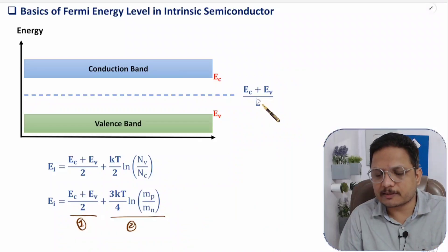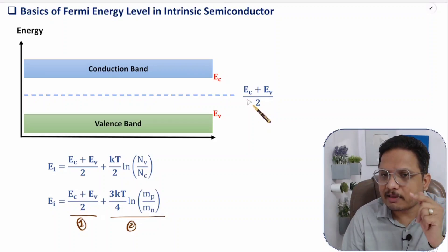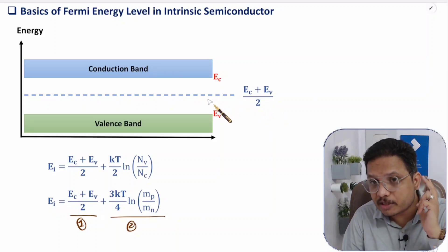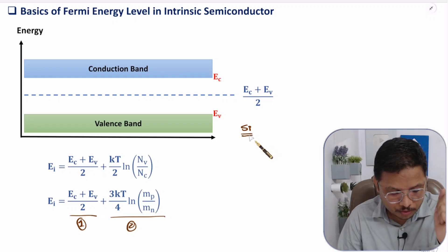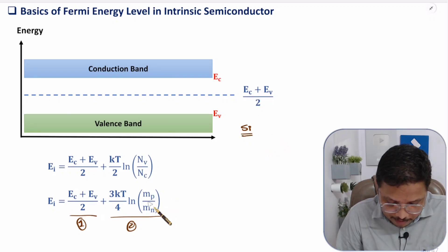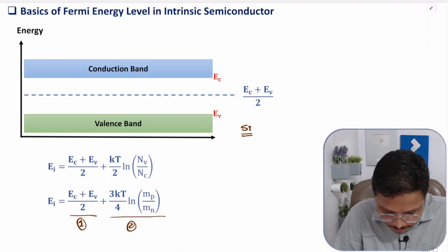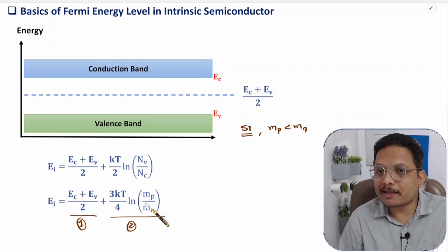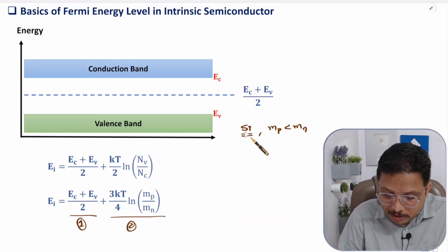But sometimes in competitive examinations, a tricky question comes — like, for silicon, will the Fermi energy level be below or above (Ec plus Ev)/2? For silicon, the mass of holes Mp is lower than the mass of electrons Mn. So the ratio Mp/Mn is less than 1, making ln(Mp/Mn) negative. Therefore the second term is negative, and for silicon the Fermi energy level Ei is slightly below the midgap (Ec plus Ev)/2.